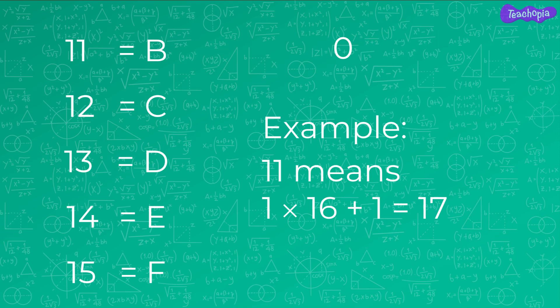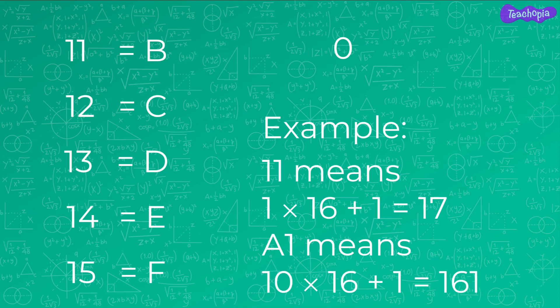Hexadecimal number A1 means the alphabet A has a value of 10 and it represents 10 groups of 16, and the digit 1 on the right means one object. Hence, the hexadecimal number A1 represents a value of 161. In this way, by making groups of 16, we create hexadecimal numbers.